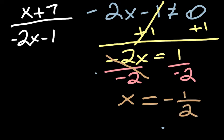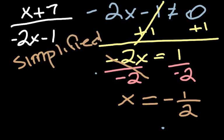Okay, so that means that this expression is simplified, but you know that there is one number that it cannot be, and that is the exception.